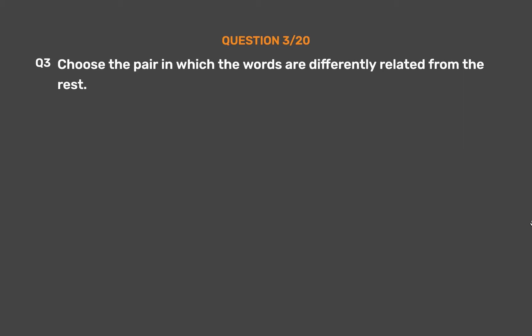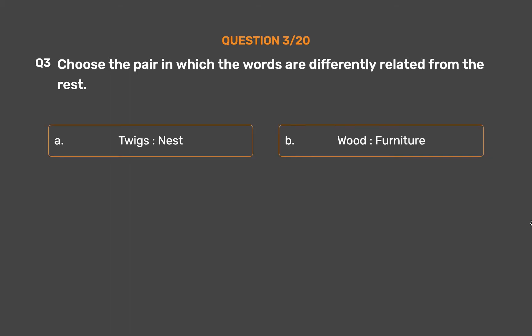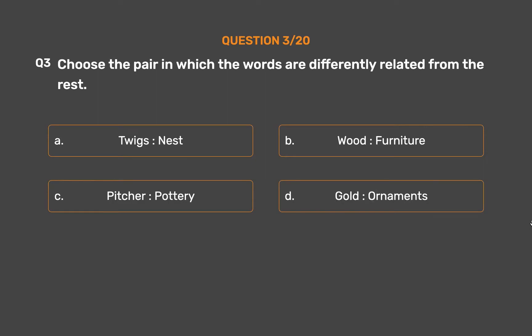Question number 3. Choose the pair in which the words are differently related from the rest. Option A: Twigs, Nest. Option B: Wood, Furniture. Option C: Pitcher, Pottery. Option D: Gold, Ornaments.